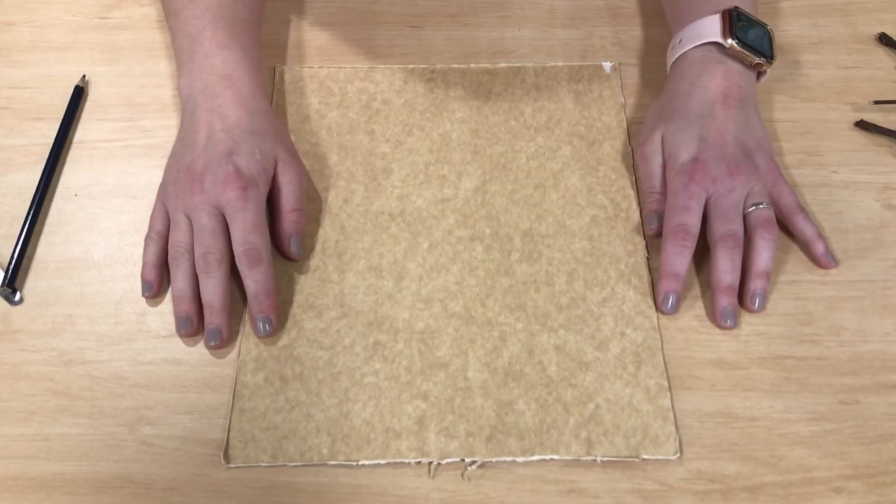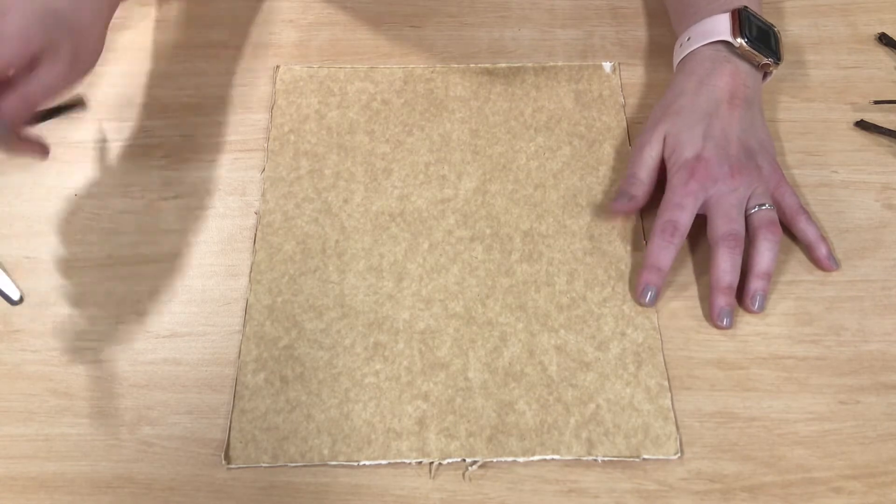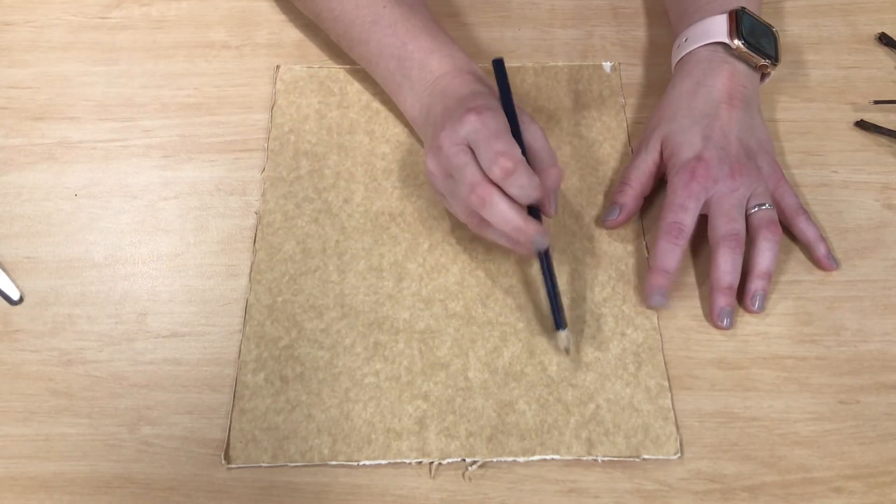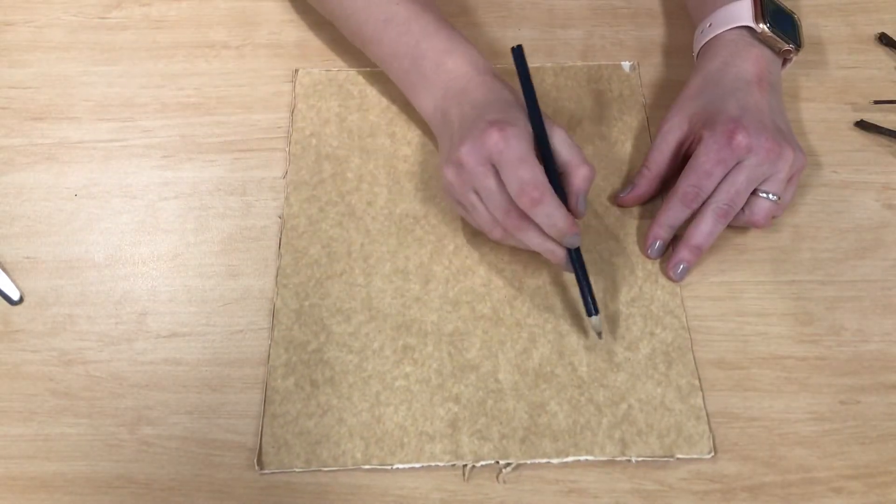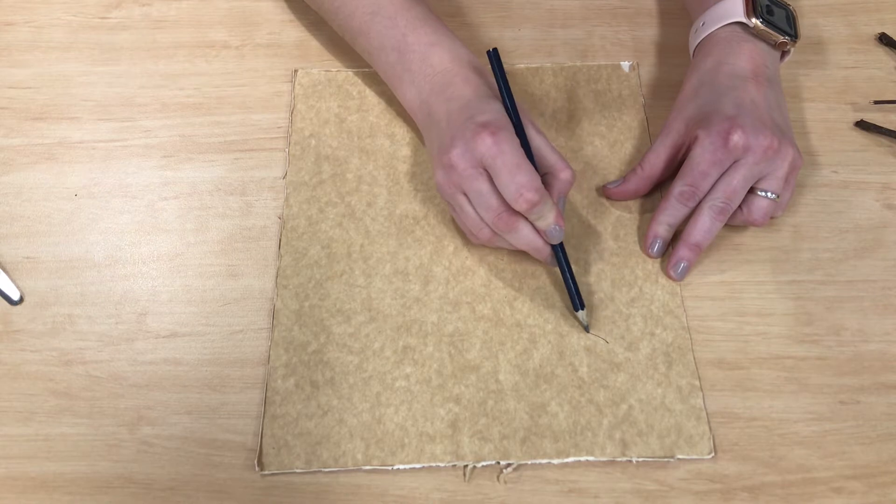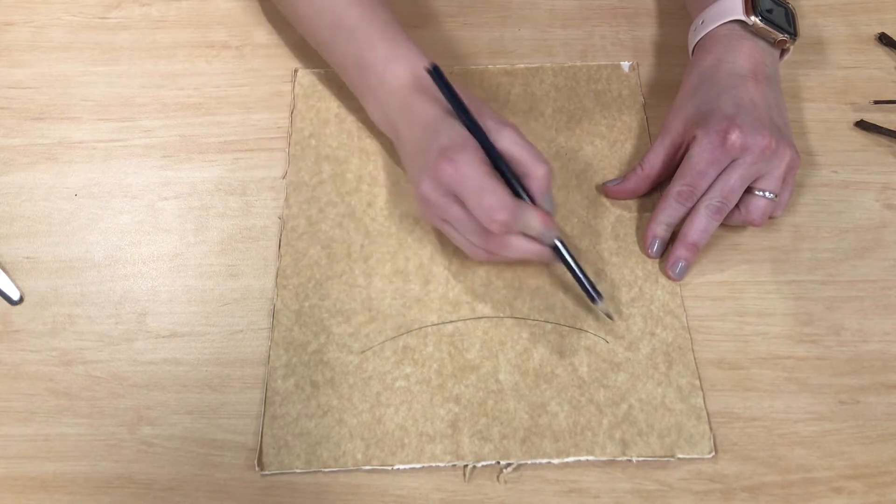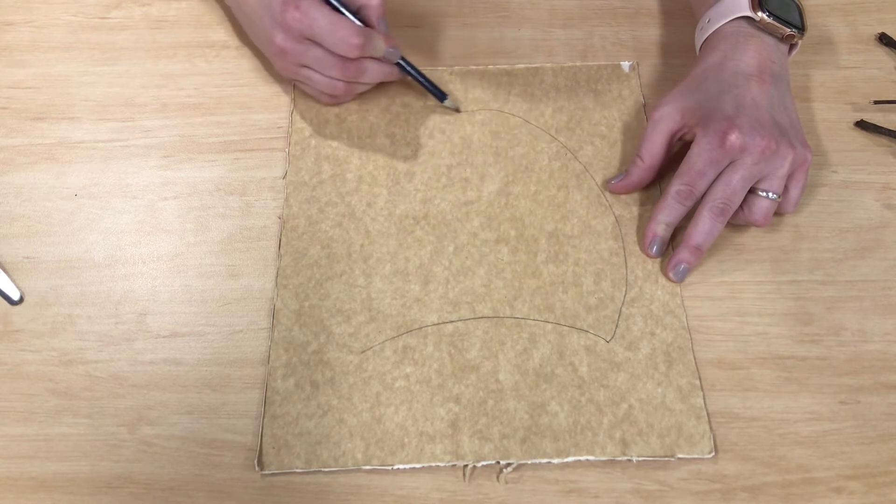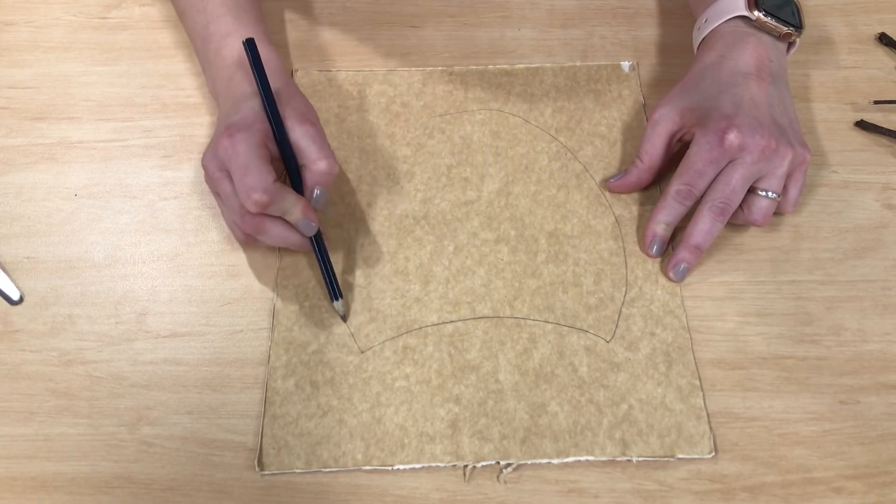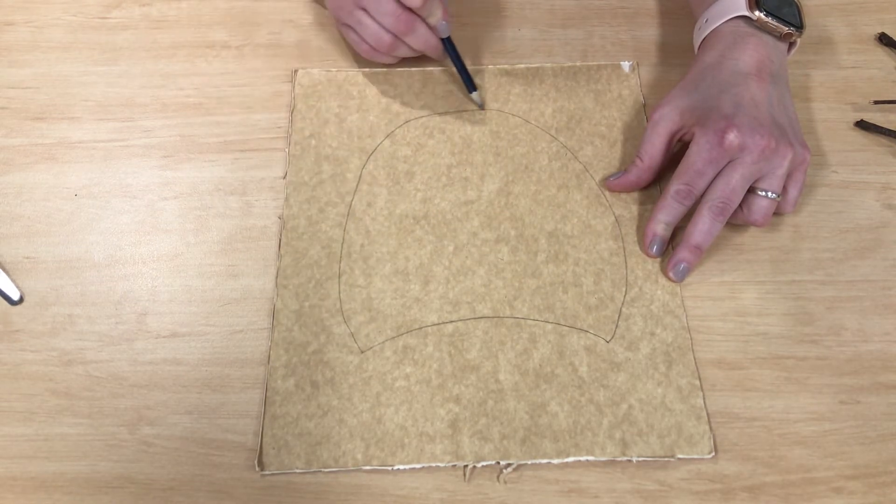Okay, so our first step for our Maker Monday today in making our owl is to draw our owl on a piece of cardboard. So I've just used a piece of cardboard from a snap box and I've got my pencil ready to draw the top of our owl and then give our owl a bit of a round body just like that.